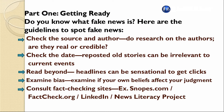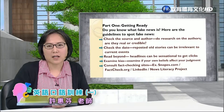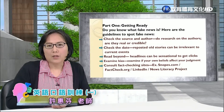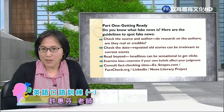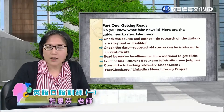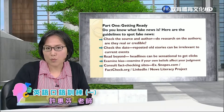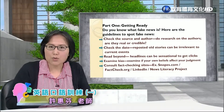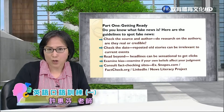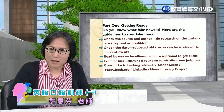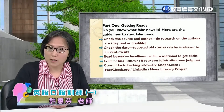再来是examine bias，我们要去检验是不是有偏见这件事情. We have to examine if your own beliefs affect your judgment. 我们必须要去检查一下，是不是我们自己的一些信念会影响你的判断. Some people have their own beliefs, especially political. The political sides will influence their choice about media or TV channels to watch, and the information from these channels will influence your judgment.